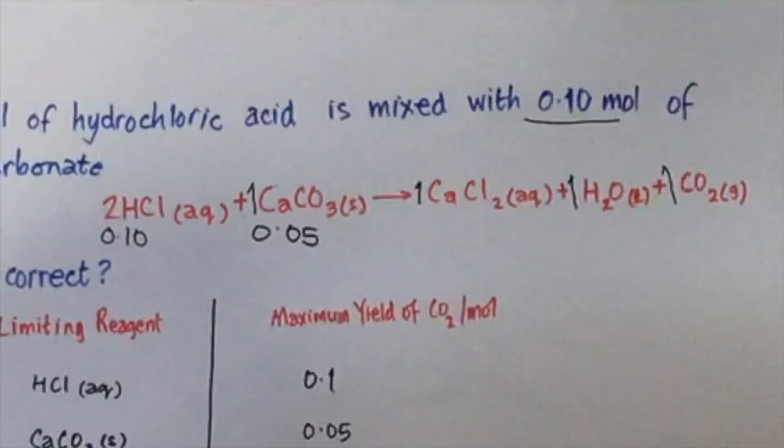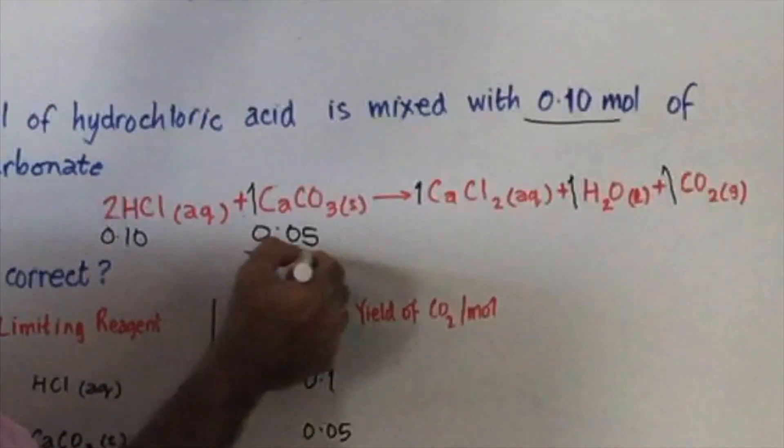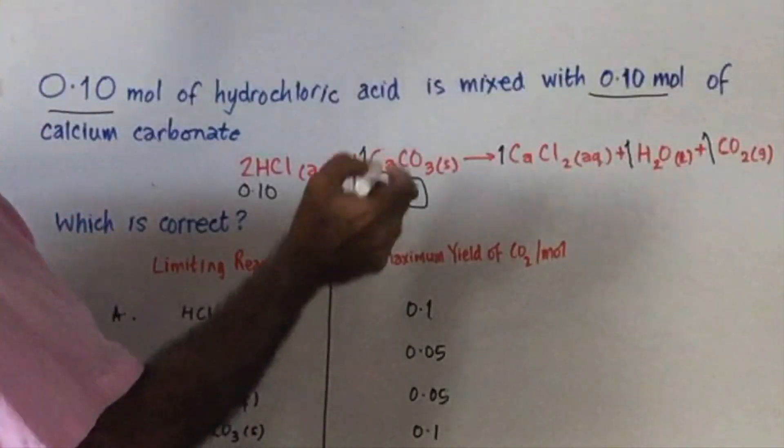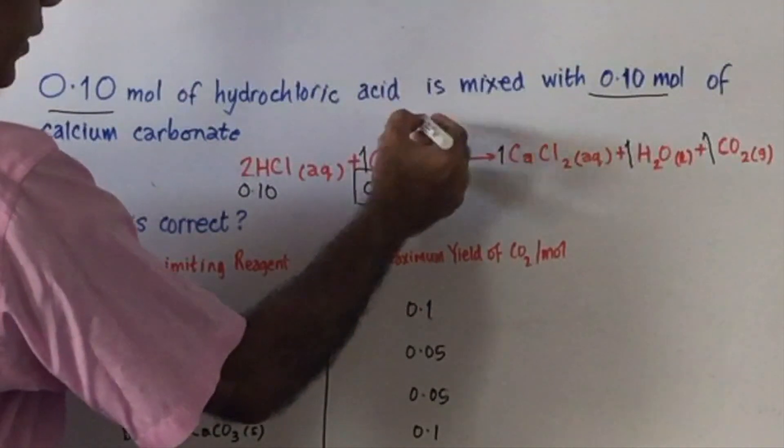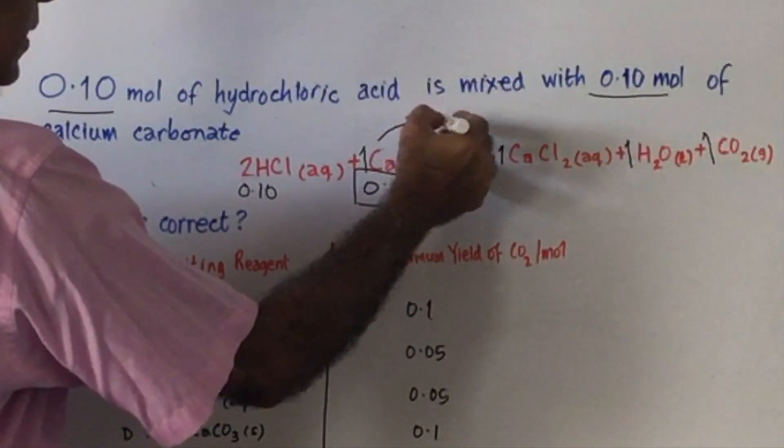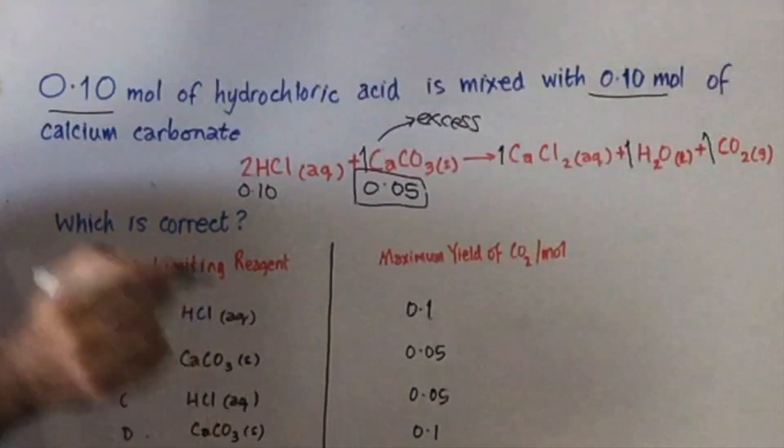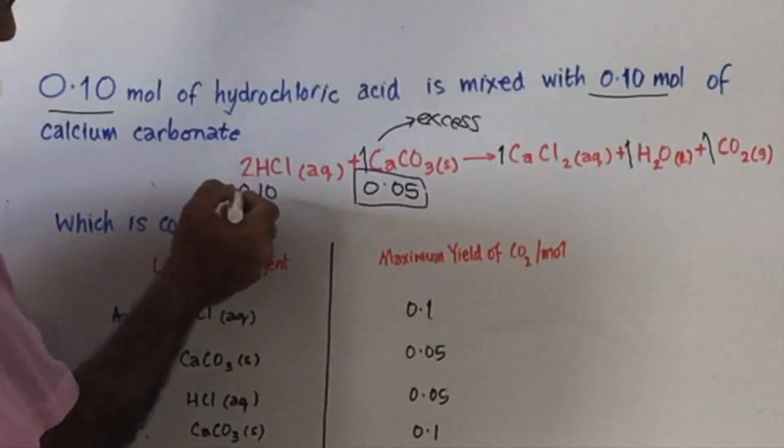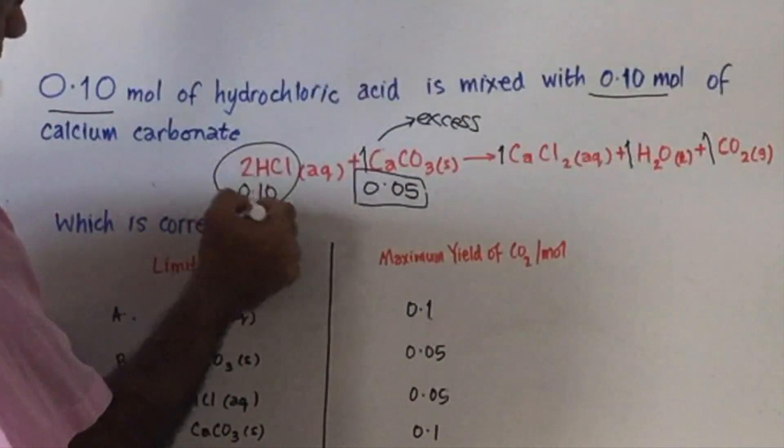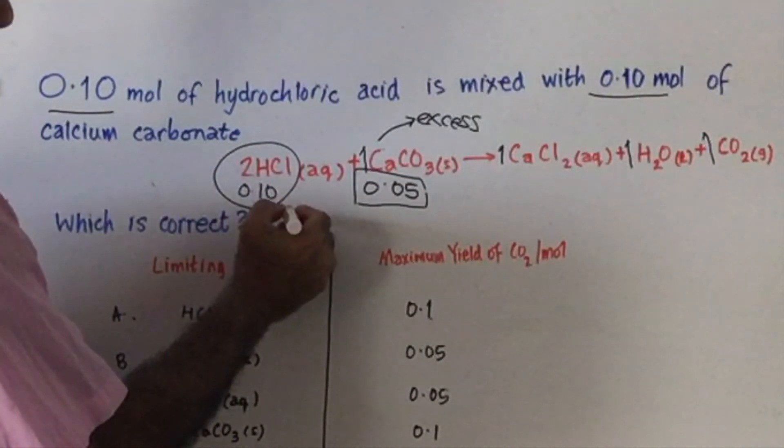So what that means is that with this number of moles actually being used, you will have some of the moles of calcium carbonate left over in excess. If you wanted to use all of that excess, you'll need twice as much of the hydrochloric acid. So this is your limiting reagent.